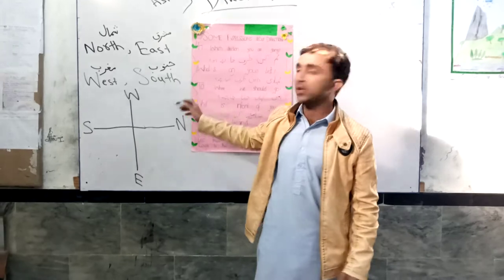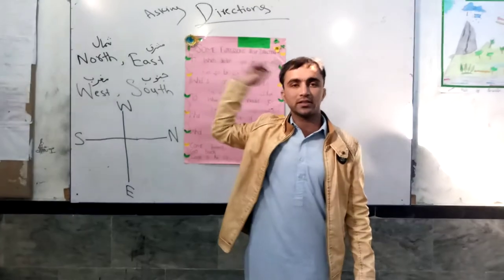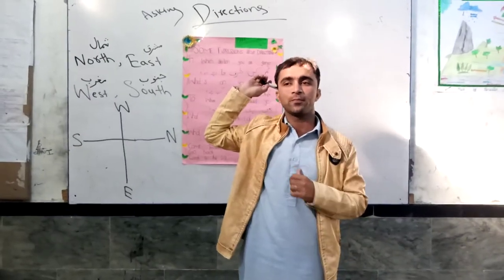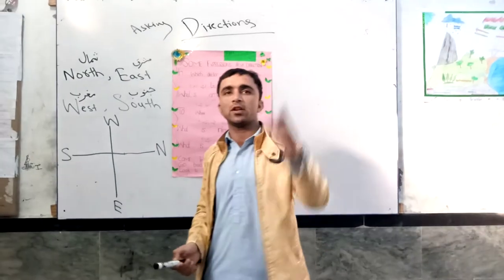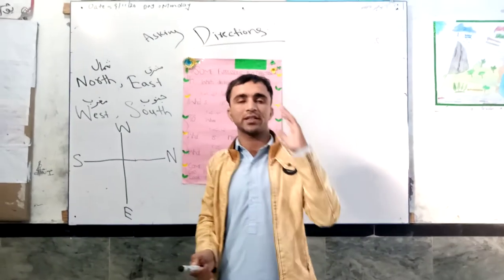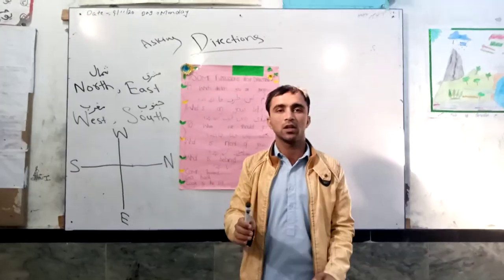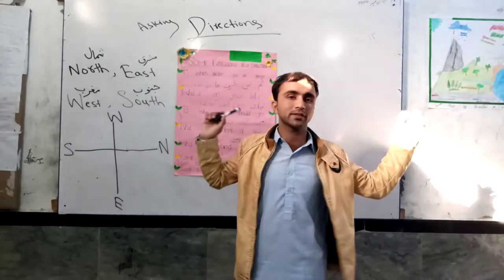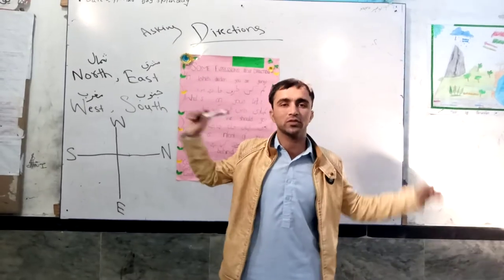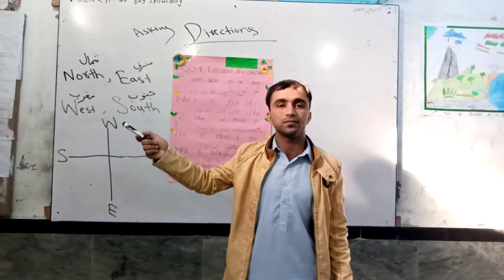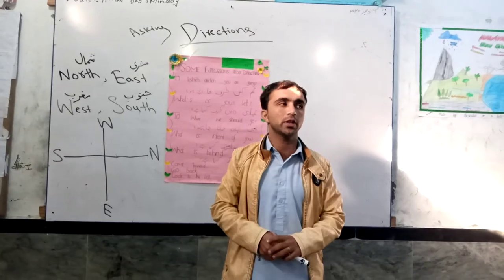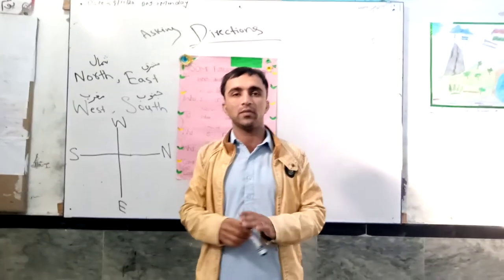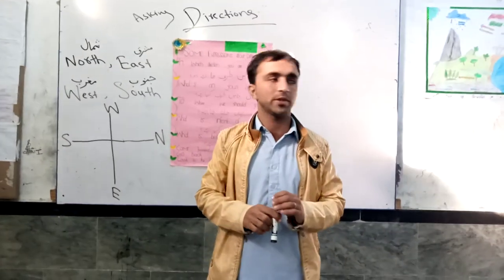West is on this side and East is on this side, because the Sun rises in the East and the Sun sets in the West. This one is the North side and this one is the South. These are the four directions of the compass. I hope you have understood. Thank you very much.